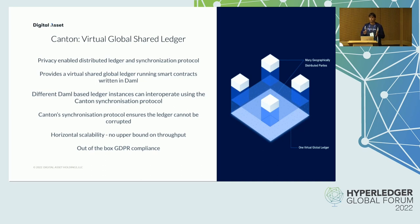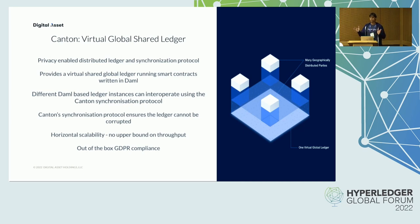Corrupted state never occurs even in the presence of malicious actors. Canton is built around the principle of data minimization and the right to forget — as a result, Canton is always GDPR compliant. Canton has no upper bound on how many transactions per second it can process; it can be scaled to achieve any transaction processing speed.